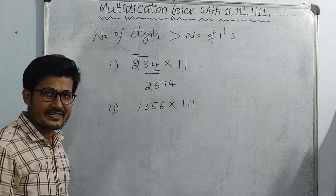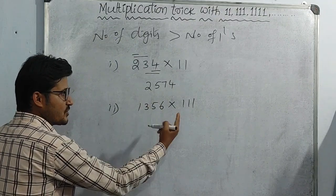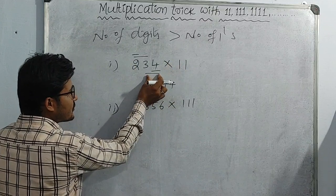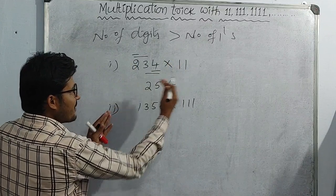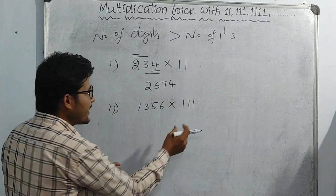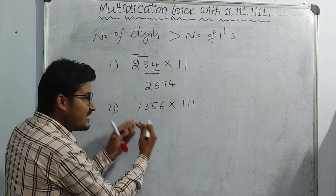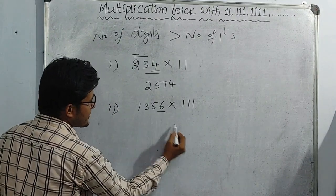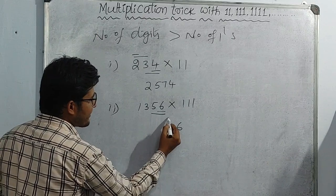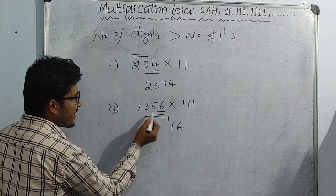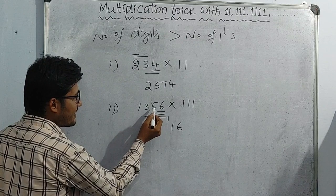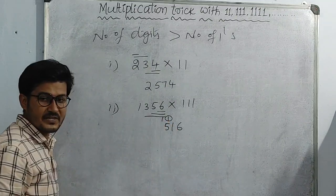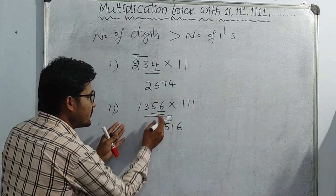Let's try 1,356 into 111. Here we have only three 1s, so we apply the same logic. Right to left: 6, then 6 plus 5 equals 11, so 1 carry. Then 6 plus 5 plus 3 equals 14 plus 1 equals 15. From left to right: 1 plus 3 plus 5 equals 9 plus 1 carry equals 10.